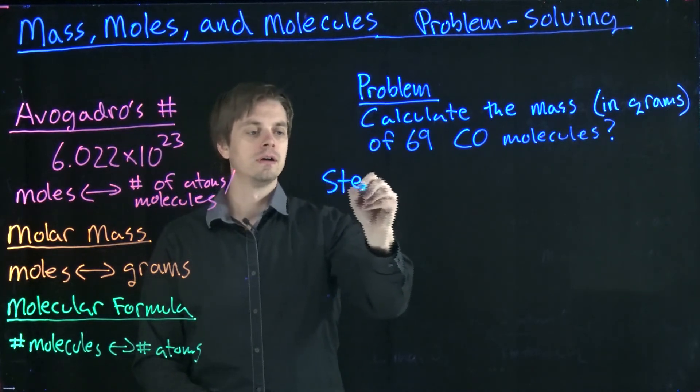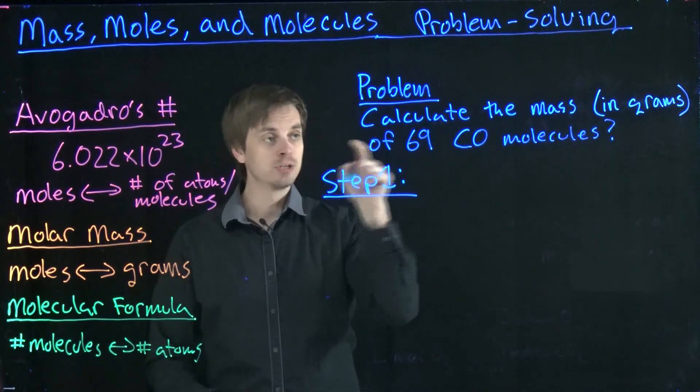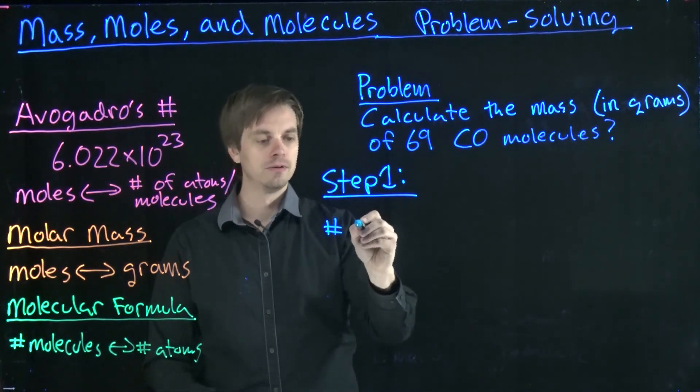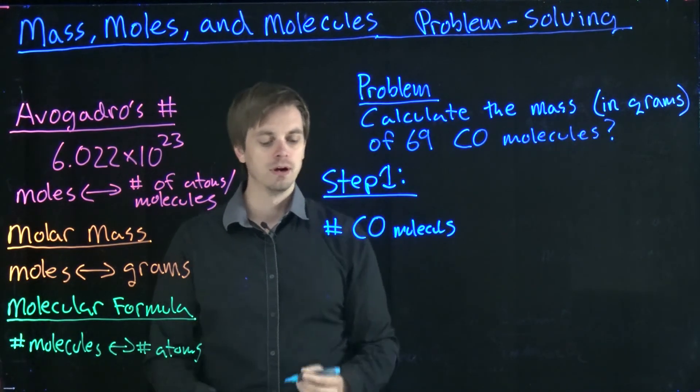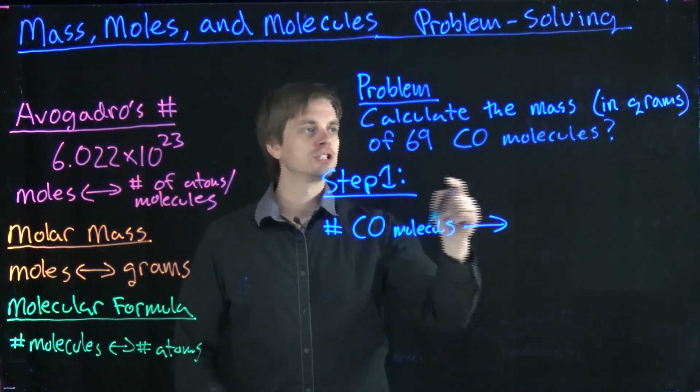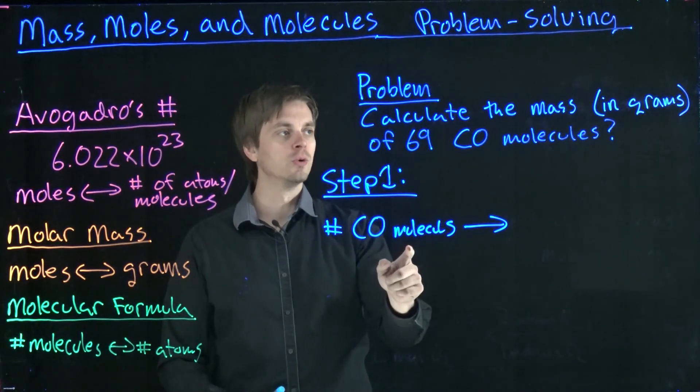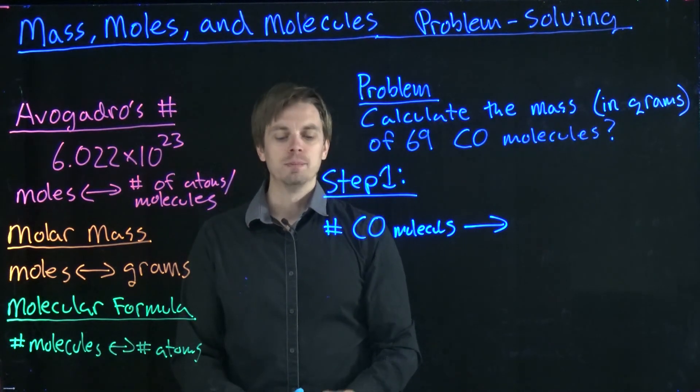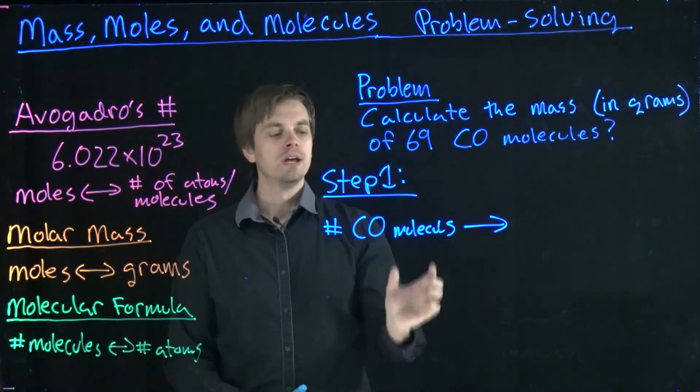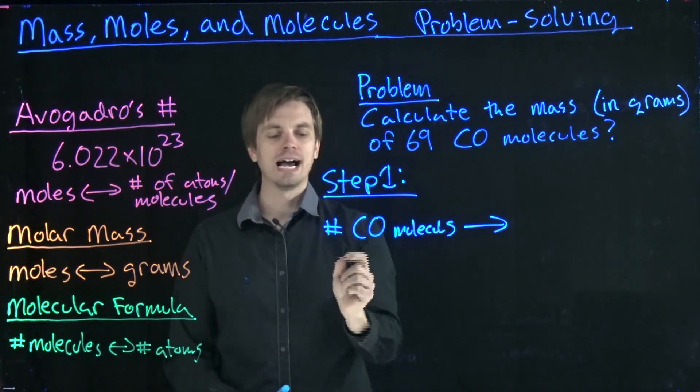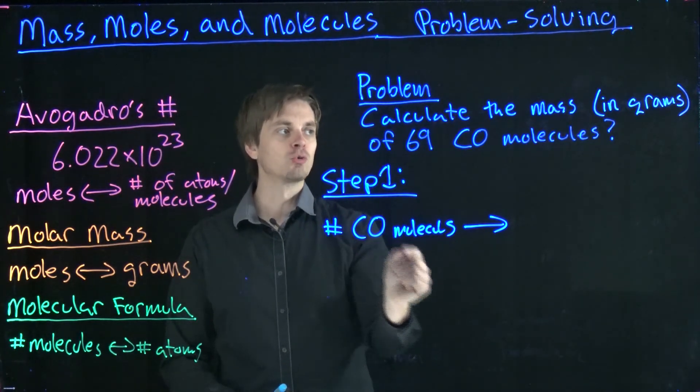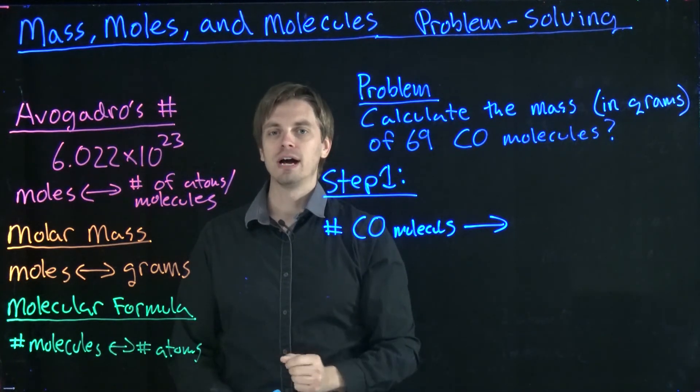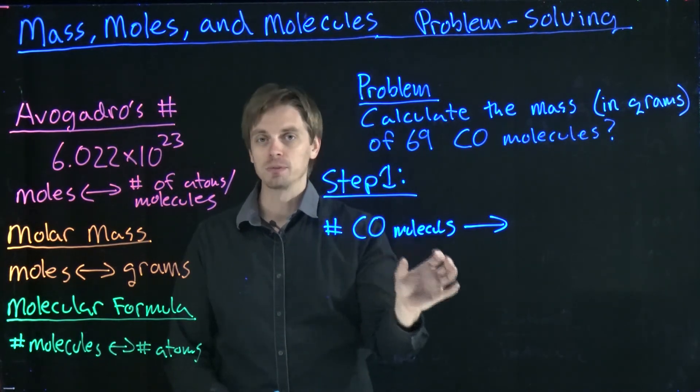So our first step is to essentially write out what we need to do. We're starting off with numbers of atoms, numbers of CO molecules. We then need to figure out some way to go from numbers of molecules to mass. To accomplish this, we're going to come over to our list of conversion factors. But just as we saw in the previous video, we're going to run into a problem. There are no single conversion factors that allow us to move from numbers of atoms directly into the mass of that sample. So what we're going to have to do is carry out a series of conversions that accomplish this task.